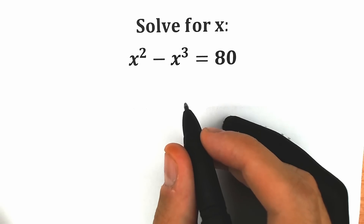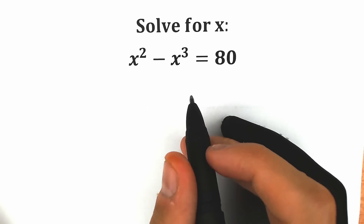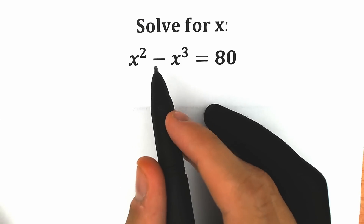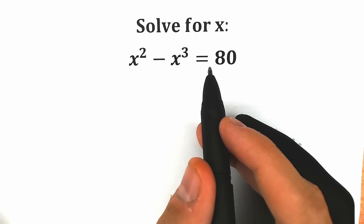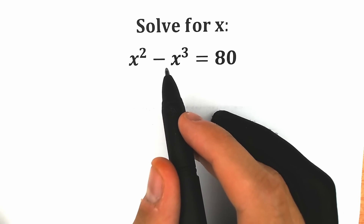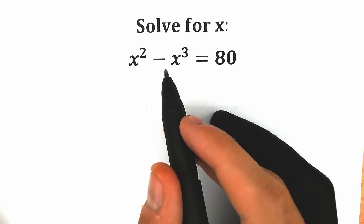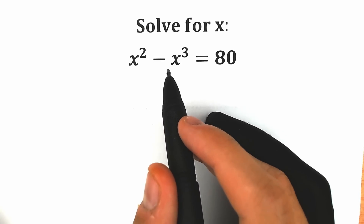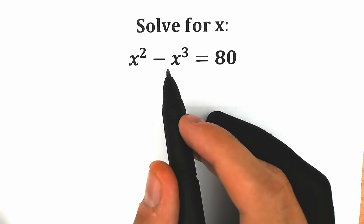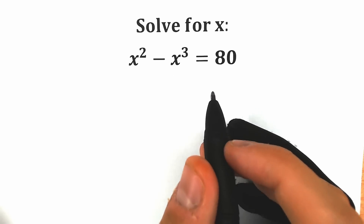Hello everyone! Happy to see you here on my channel Higher Mathematics. Today we have a really interesting equation: x squared minus x cubed equal to 80, and we need to find x. You can pause the video and try to solve this challenge by yourself. Write your assumption down in the comment section and we will check your answers here in just a few minutes — it will be really interesting.